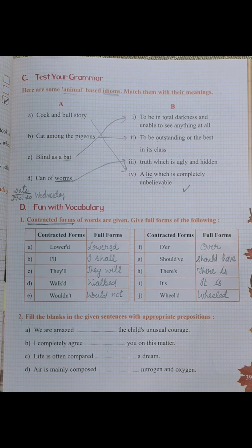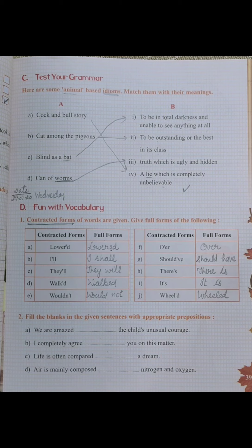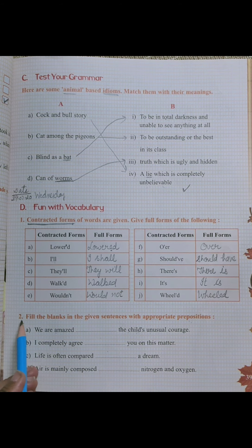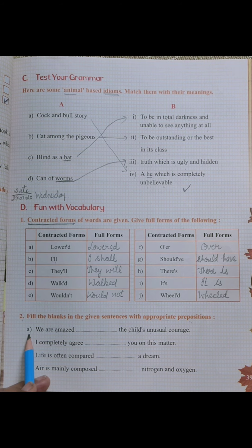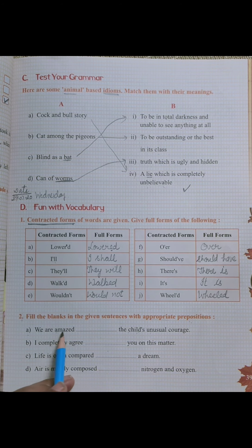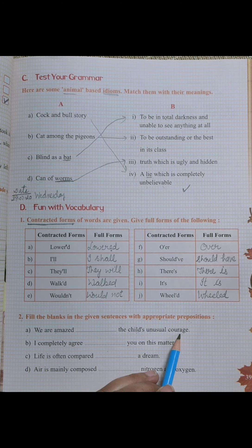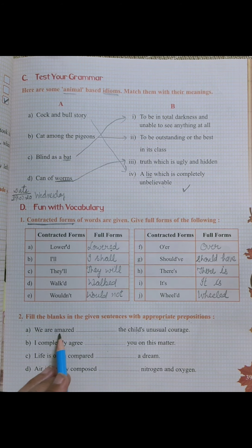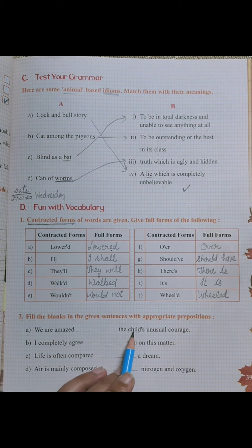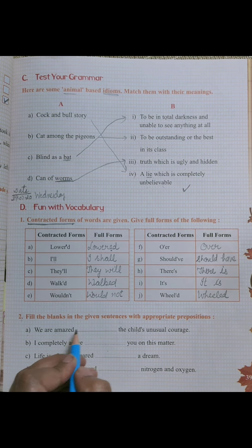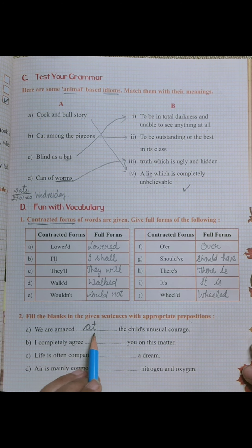These are the prepositions we have done: at, to, on, of, for, and with. Now we are going to do question number two. First: 'We are amazed ___ the child's unusual courage.' हम उस child की असामान्य बहादुरी पे amazed हैं — so we use 'at': amazed at.